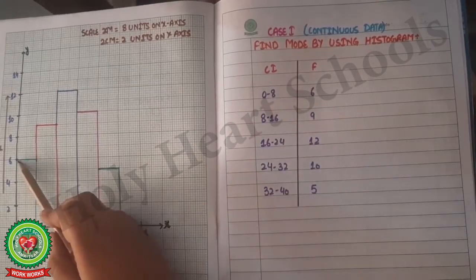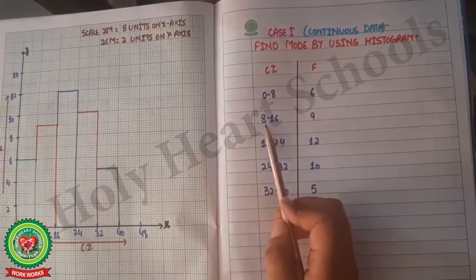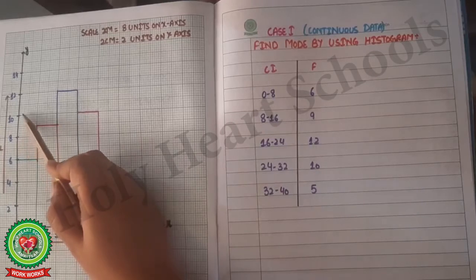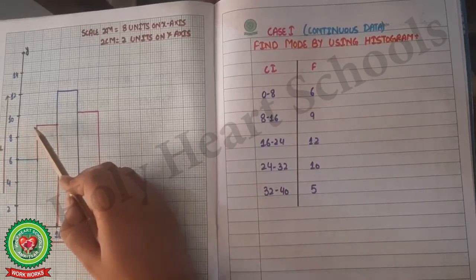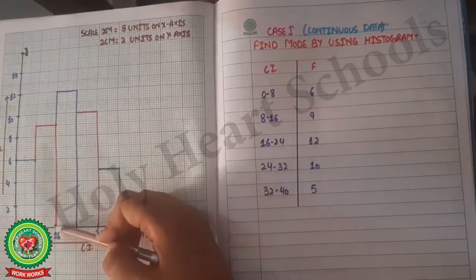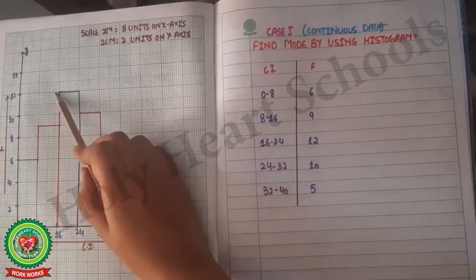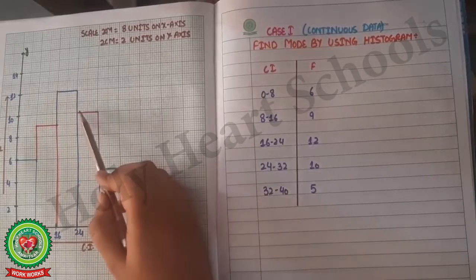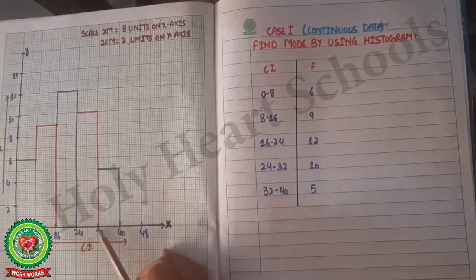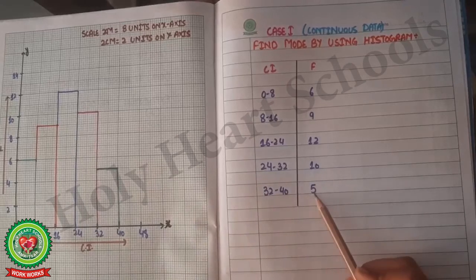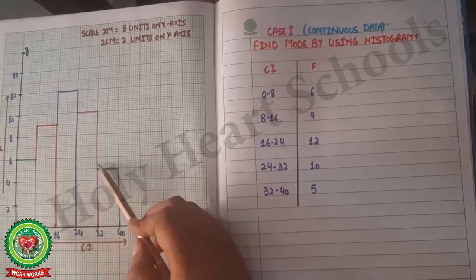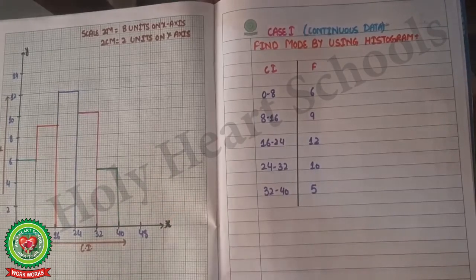The first bar is 0–8 with frequency 6. The second bar is 8–16 with frequency 9, which falls between 8 and 10. The third bar is 16–24 with frequency 12. The fourth bar is 24–32 with frequency 10, and the last bar is 32–40 with frequency 5, which falls between 4 and 6. This completes the histogram.